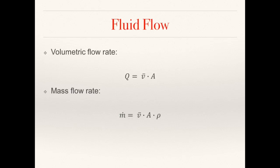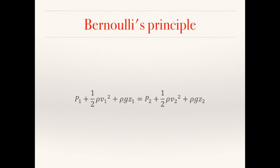For energy to be conserved as a fluid flows through a pipe, there are a number of criteria that must be met: it must be an ideal fluid, the flow must be steady, there must be no external forces, and it must be valid along a streamline. Bernoulli's principle is extremely useful in fluid mechanics. It states that for a non-viscous, non-conducting fluid flowing through a pipe, the pressure and velocity of the fluid are related, such that for the velocity to increase as the fluid flows, the pressure must decrease and vice versa.